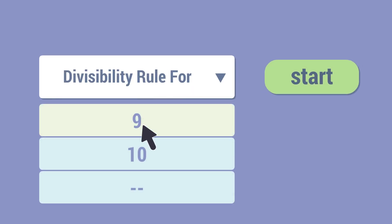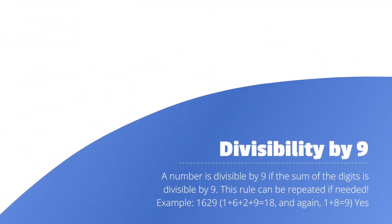Here is the divisibility rule for 9. A number is divisible by 9 if the sum of the digits is divisible by 9, and this rule can be repeated if needed. For example, for 1629: 1+6+2+9=18. Applying the rule again on 18: 1+8=9, and 9 is divisible by 9.